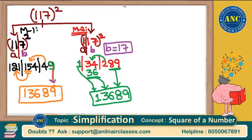Very important key point: if b is taking one digit, you should also drop one digit from the end, other than the leftmost place. If b is taking two digits, drop two digits from the end. In general, if b takes N digits, you should also drop N digits from the end, other than the leftmost place.